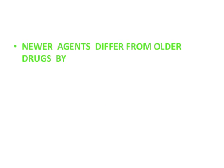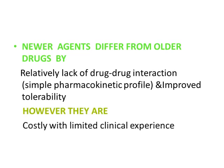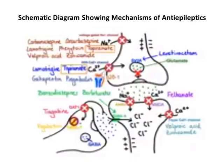Newer agents differ from older drugs in that they have relatively fewer drug-drug interactions, a simpler pharmacokinetic profile, and improved tolerability. However, they are more costly with limited clinical data. This schematic diagram shows the mechanisms of different antiepileptic medications.